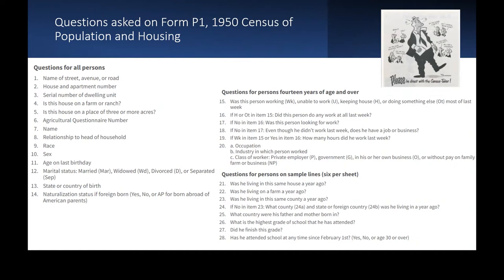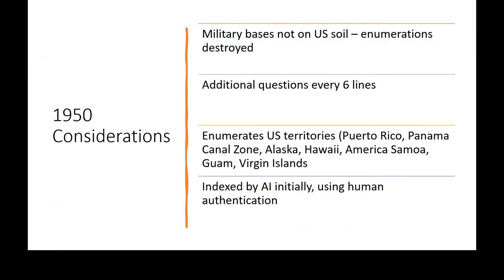Sample line questions included: were they living in the same house a year ago, what's the highest grade, school questions, and where their parents were born. There's plenty of opportunity for incomplete or wrong information, as with everything we use. We do not know who answered the questions in the 1950 census. In the 1940 census, a little circle with an X marks who gave the information, but that's only 1940. There is no such indication on the 1950 census.